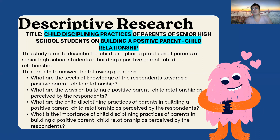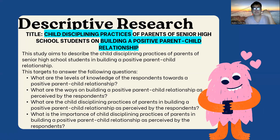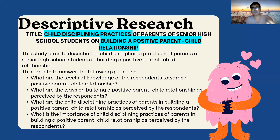My technique on how to formulate the questions is from general to specific. Think about the general idea based on your title. The general idea here is positive parent-child relationship — that is your main problem. So the first question in the statement of the problem is: 'What are the levels of knowledge of the respondents towards a parent-child relationship?' It is first because it is the most general — it is the main topic.